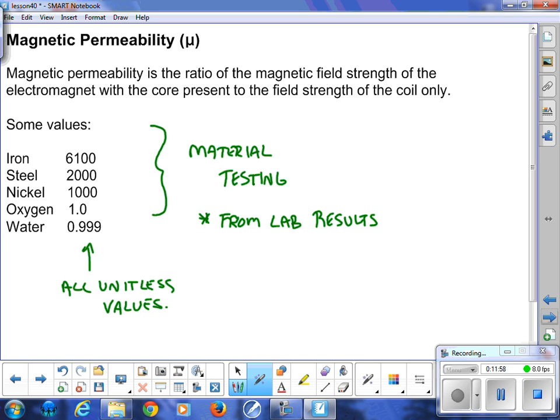Magnetic permeability is the ratio of the magnetic field strength of an electromagnet with the core present to the field strength of the coil only. So we're looking at with and without the coil in there. These values come from lab testing. You can see iron has a very high magnetic permeability, so it's a very good material to put in a solenoid. Whereas water, not very good. And all these values, because it's a ratio of two magnetic field strengths, there is no units here.